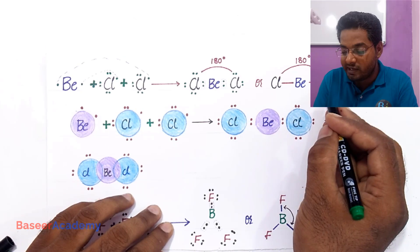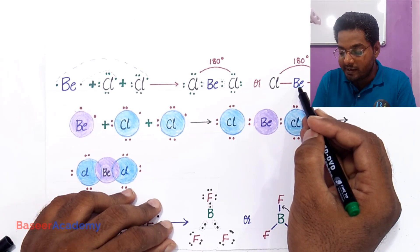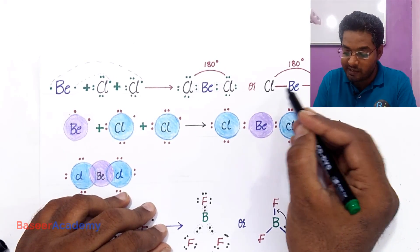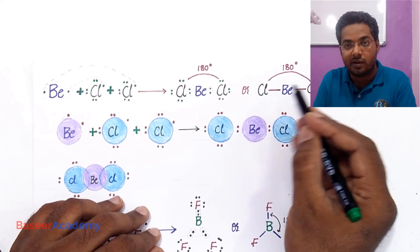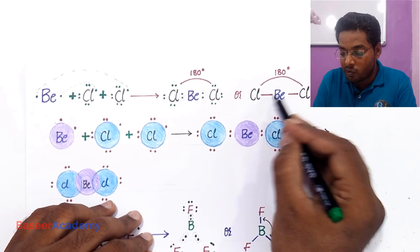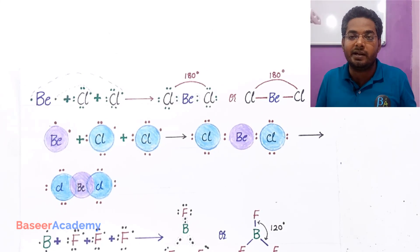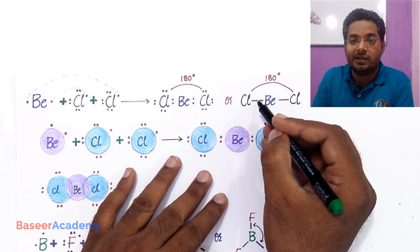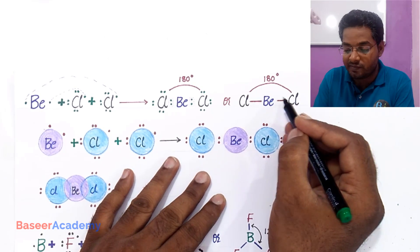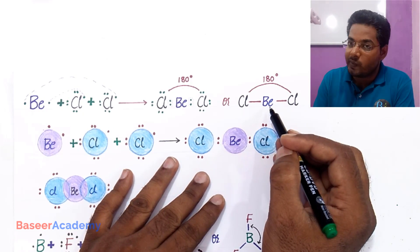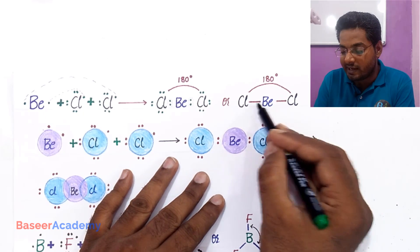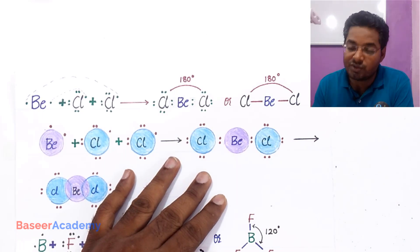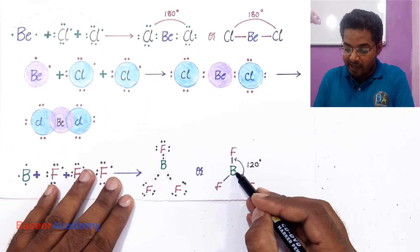Let us consider the formation of beryllium chloride. In beryllium chloride, beryllium is connected to two chlorine atoms by single covalent bonds, so the central atom beryllium has two covalent bonds. The electrons in the bond pair repel each other and should go as far as possible to minimize repulsion. Valence shell electron pair repulsion theory says that if the central atom has two bond pairs with no lone pairs, the bond angle has to be 180°.